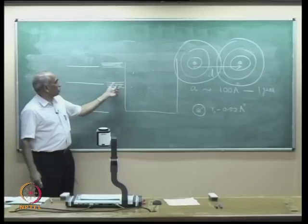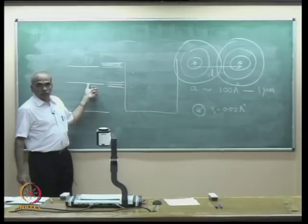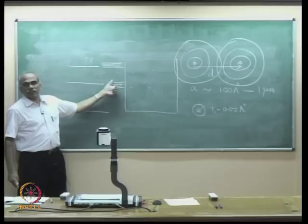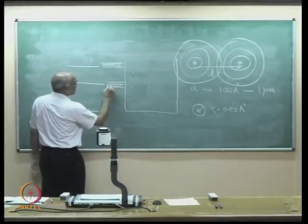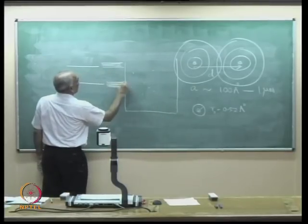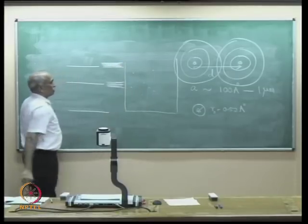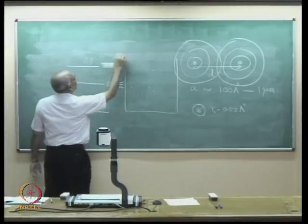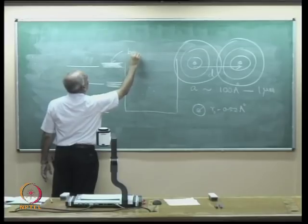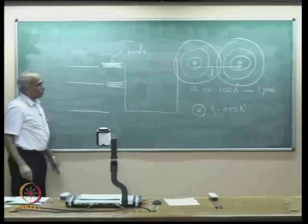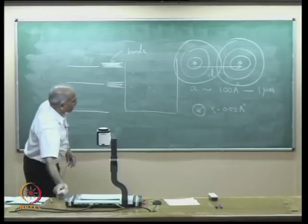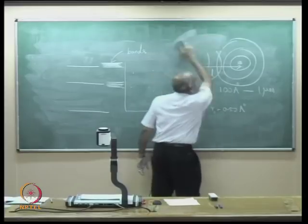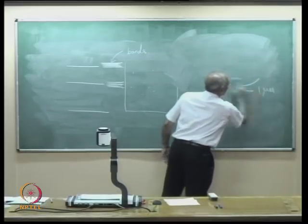Allowed levels become more than one — corresponding to one original level, you now have several energy levels. And as the number of atoms increases, this goes over to a band. As you decrease the inter-atomic spacing, the energy levels go over to bands.